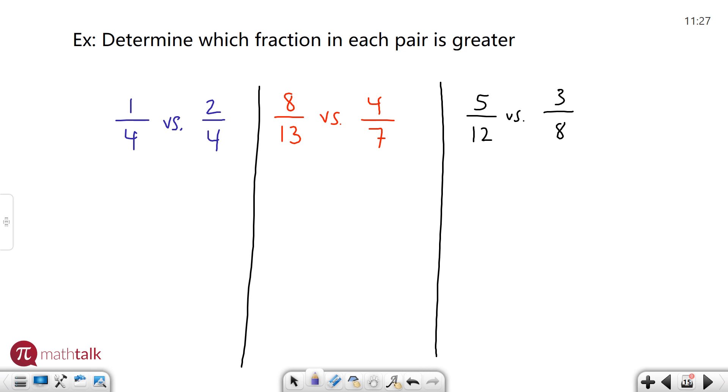In our first example it's really easy because if the denominators are the same then all you have to do is compare the numerators, the top number. Obviously two is bigger than one so this fraction is bigger than the other one. Two-fourths is more than one-fourth.